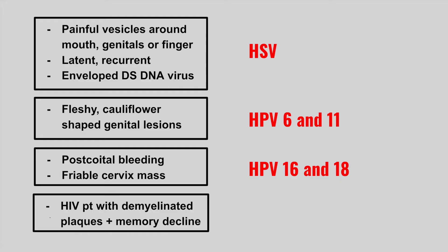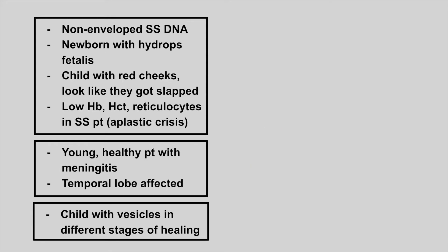The next patient is going to have HIV with demyelinated plaques in the brain and memory decline. This is JC virus causing PML. The next patient is going to get an infection with a non-enveloped single-stranded DNA virus. A newborn can have hydrops fetalis, a child can have red cheeks that look like they got slapped, or a sickle cell patient can have low hemoglobin, low hematocrit, and low reticulocyte count called aplastic crisis.